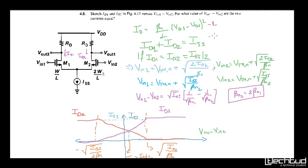So we have been given id1 equals id2 equals ISS by 2. So if we re-equate from this equation, what we will get is vin1 is vthn plus under root 2 id1 by βn. Similarly for vin2.